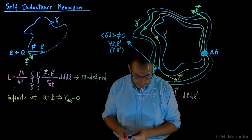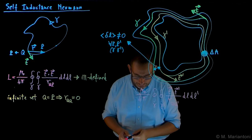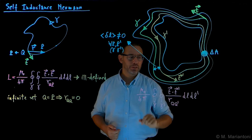This denominator here in this case is always different than zero, because we have always a little distance here between these two gamma and gamma prime lines.